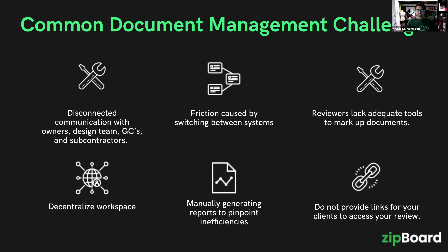Not having the right technology creates miscommunication and friction caused by system switching — when systems can't talk to each other it creates further friction. Reviewers lack adoptability with markup tools, workspaces are decentralized, and reports are generated manually. We want to move toward automatically generating reports for seamless communication. Working with external stakeholders also becomes difficult if they don't have a license, forcing you to download and resend documents.